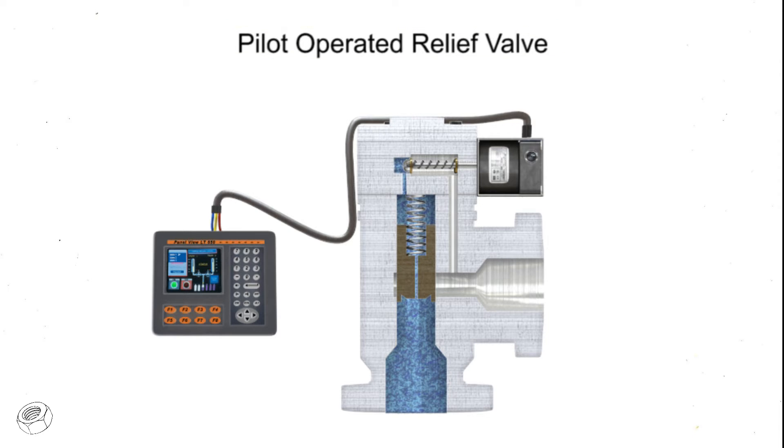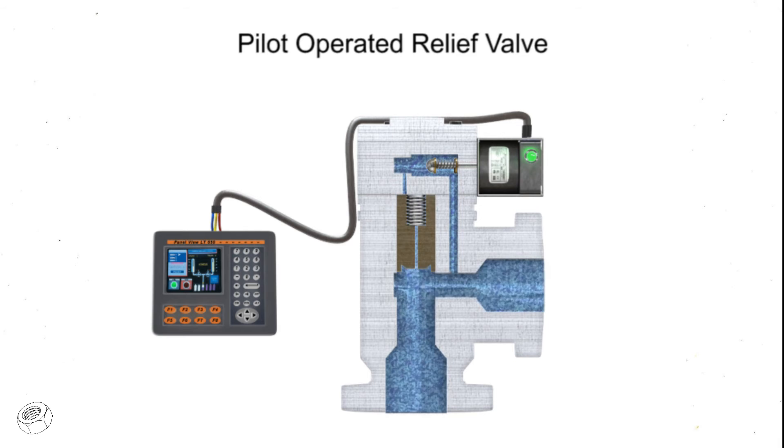When the solenoid is energized, the core opens the pilot orifice and relieves pressure from the top of the valve piston or diaphragm to the outlet side of the valve. This results in an unbalanced pressure, lifting the piston or diaphragm off the main orifice. When the solenoid is de-energized, the pilot orifice is closed and full line pressure is applied to the top of the piston or diaphragm, closing the valve.